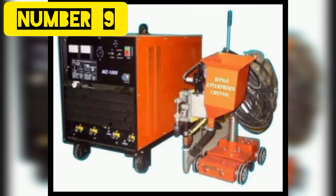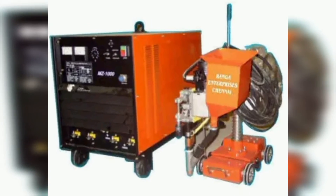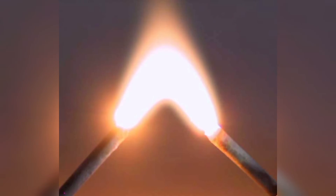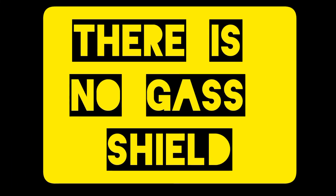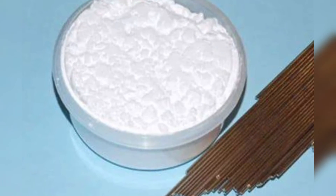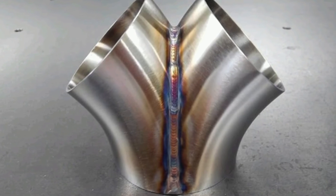Number 9: Submerged Arc Welding Machine. These machines usually involve the creation of an electric arc between a continuously fed electrode and the workpiece to be welded. This means there is no gas shield, but a powder flux. Submerged arc welding machines produce higher quality welds than other types.